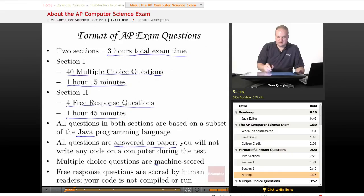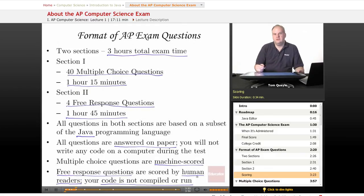The multiple choice questions are going to be machine scored. So you'll need a number two pencil to fill in the bubbles for those answers. The free response questions are scored by human readers. Meaning there are computer science teachers who are going to read the free response answers and determine from just reading your code whether your code appears to be correct or not. Your code is not compiled or run to see if it is correct or not. So your job is to convince a human reader that your code is correct.